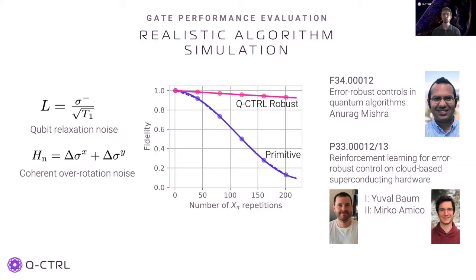Algorithms are composed of many gates. By modelling repeated gates under the influence of these noise channels, the sustained high-fidelity performance of the Q-Control robust-optimized gates is clear, in contrast to the fast fidelity decay of the primitive gates with their repetition. For more detail on the simulator and the error-robust controls, please take a look at Anurag's preceding talk in this session, which is available on demand.